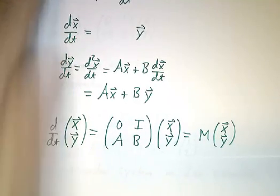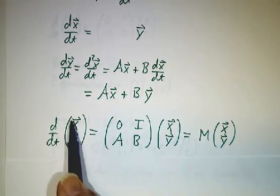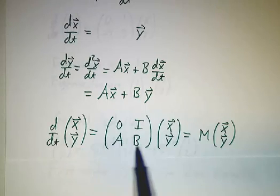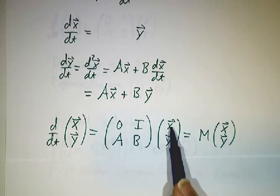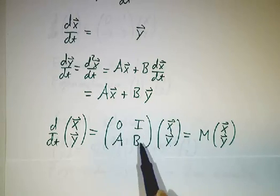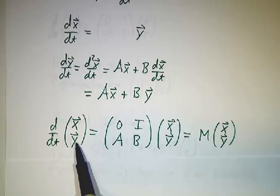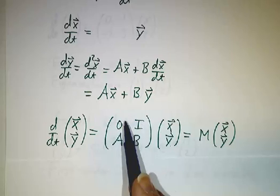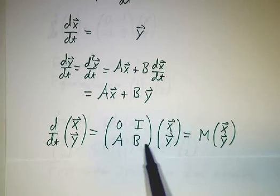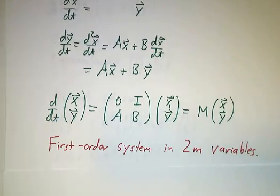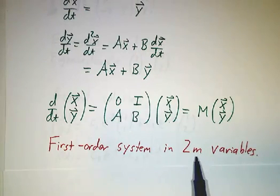So if you make a big vector out of x and y, the derivative of x and y is this big matrix times x and y. And if we call this big matrix M, see if you originally had, say, a 3×3 system, then this is going to be a 6×6 matrix. You're doubling the number of variables because you have as many y's as you have x's. So it's a first-order system in twice as many variables.